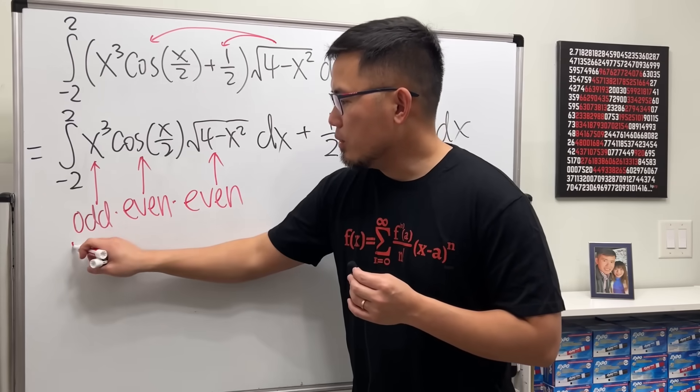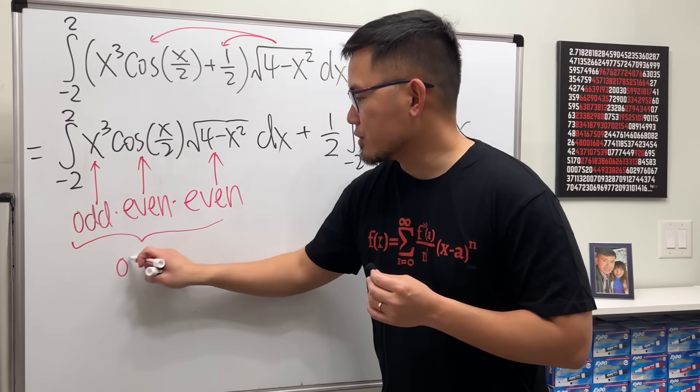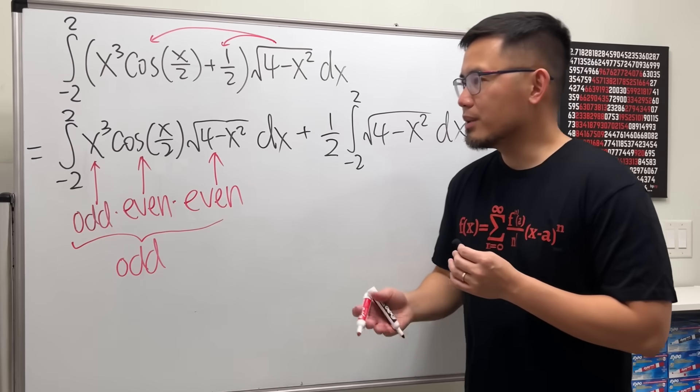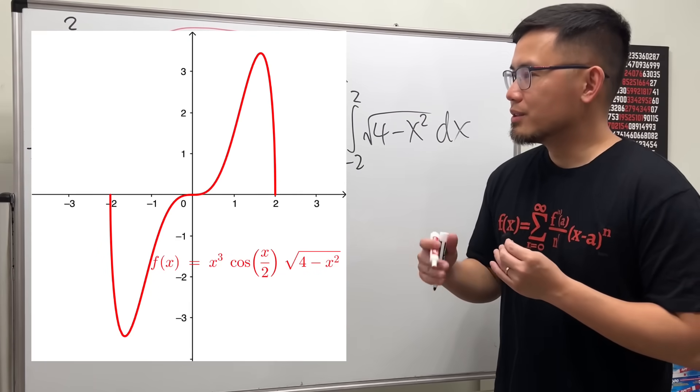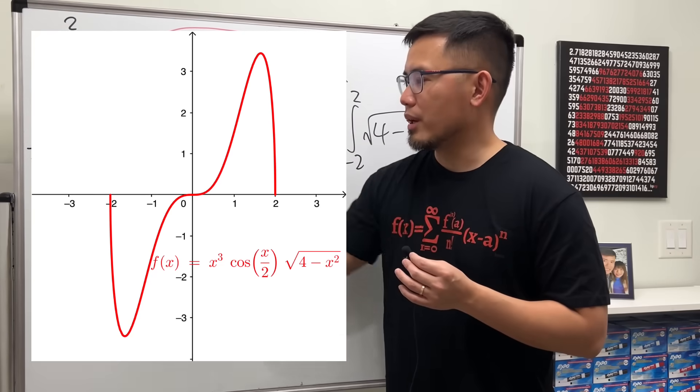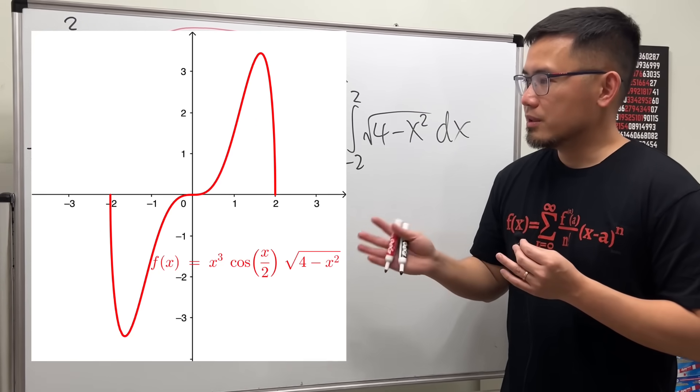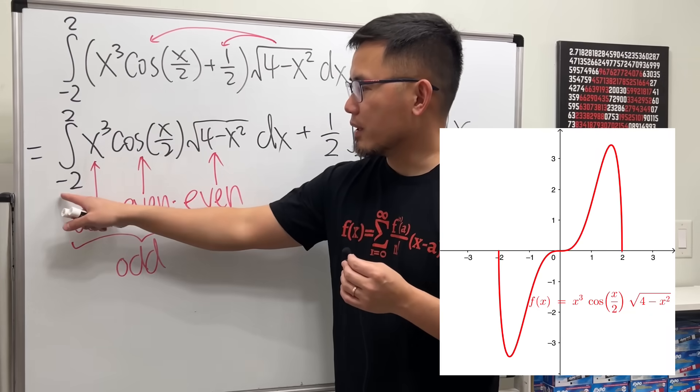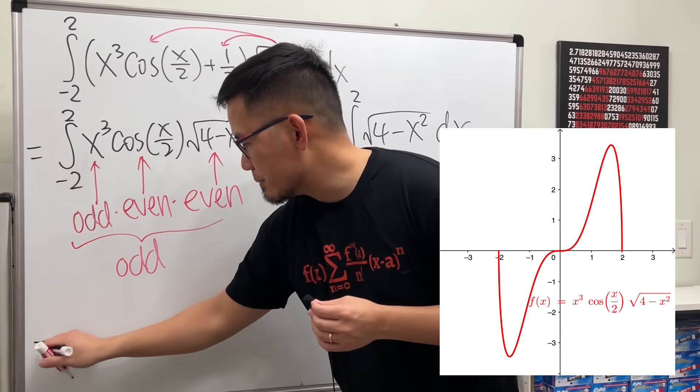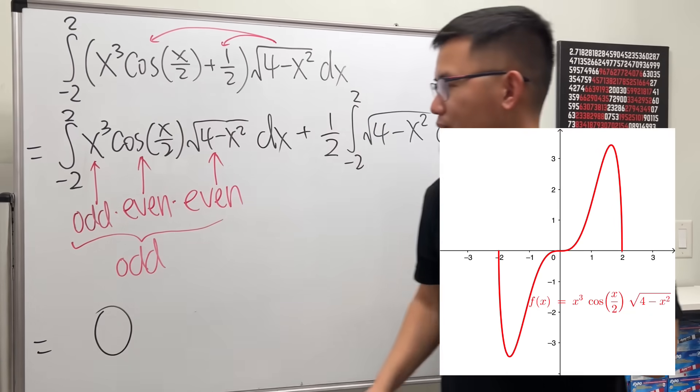Now check this out. When we have an odd function times an even function times an even function, all together we get an odd function. You can take a look at the picture right here. If you see the graph of this, you can see that it's symmetrical about the origin. So when we integrate it from negative 2 to 2, the first part will just get zero. That's very nice.